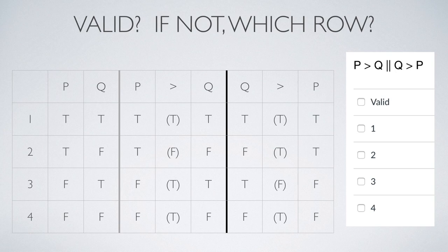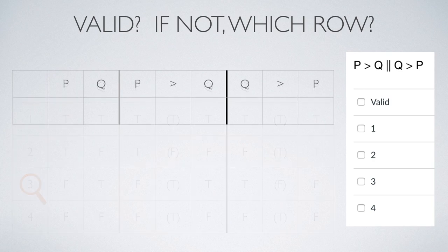To reiterate: row 3 has a true premise and a false conclusion. That tells us this argument is invalid. Now, for illustration, I want to show you how to do this with an abbreviated truth table. The nice thing about the full truth table is there's almost no room for error unless you make a simple mistake. The abbreviated truth table requires you to know what you're doing, but it can be a faster way of finding out whether an argument is invalid.